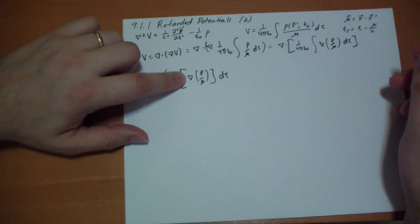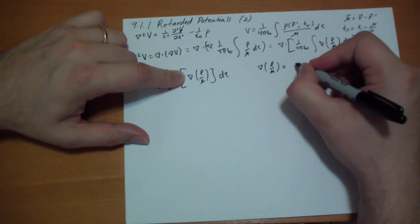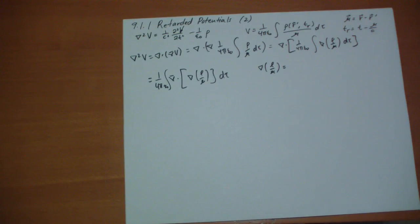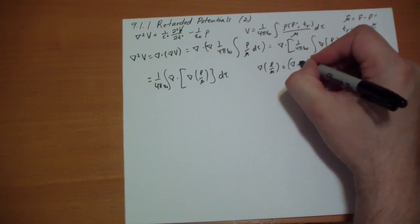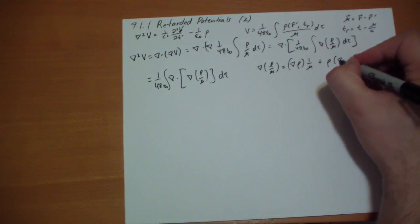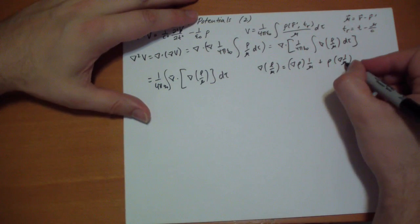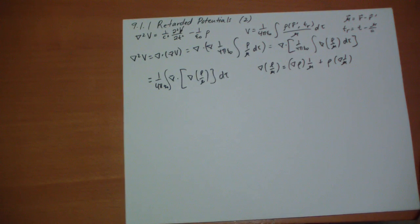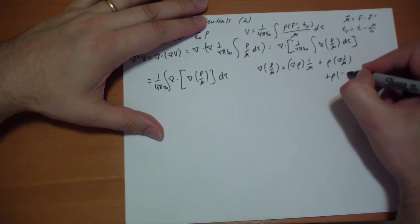So what's the gradient of ρ over r? The gradient of ρ over r equals the gradient of ρ times 1/r, plus ρ times the gradient of 1/r. The gradient of 1/r — we showed in problem 1.13 back in the beginning of the book — equals negative r-hat over r squared.